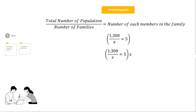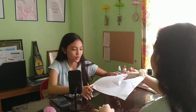So it will be 1,300 is equal to 5X. We will then divide both sides by 5, and X will be equal to 1,300 over 5. After we divide, we will get 260. So there are 260 families in Centro Norte Poblacion.